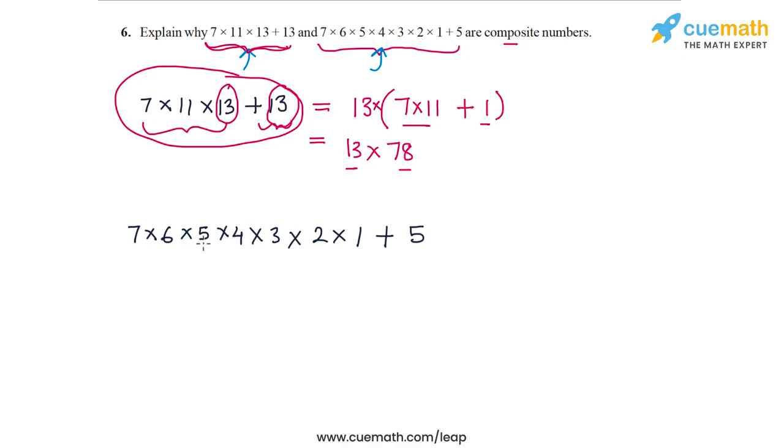We can see once again that it's a sum of two terms and there's a factor of 5 which is common in both terms.